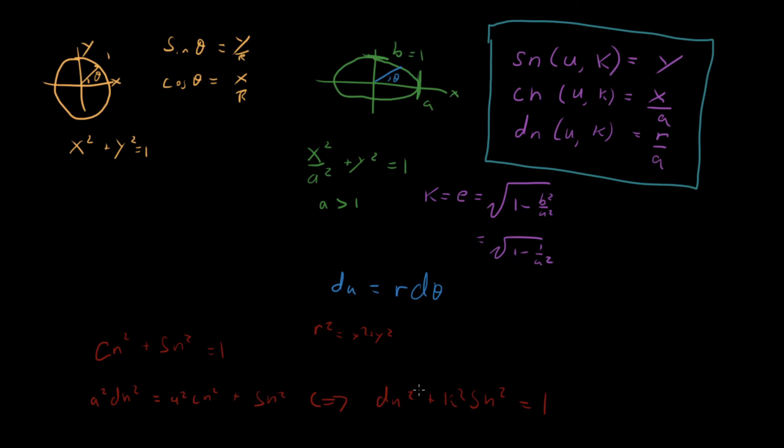And you can keep going forever and ever. And if you want, you can combine this with the first property and you get dn squared minus k squared cn squared equals 1 minus k squared. And so there are a whole bunch of different properties like this that we can derive now that we have all of these different relationships between these variables.